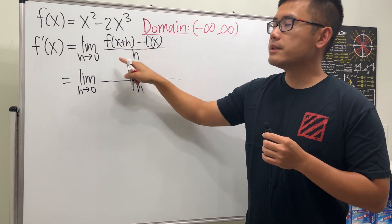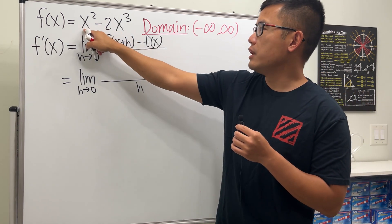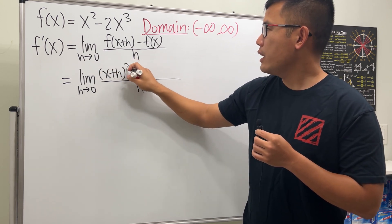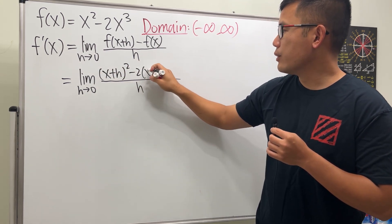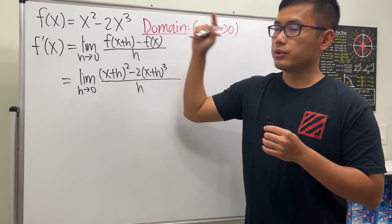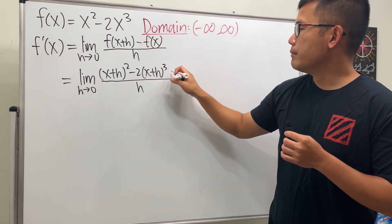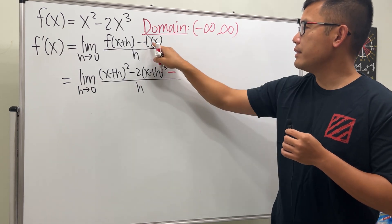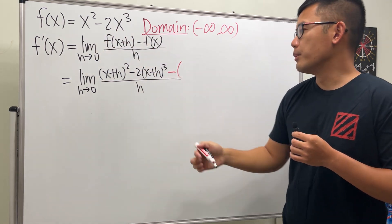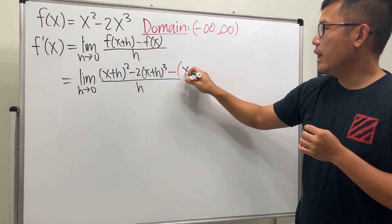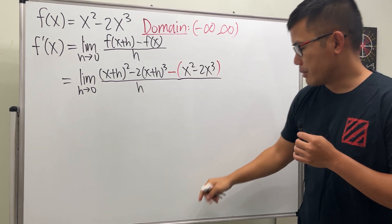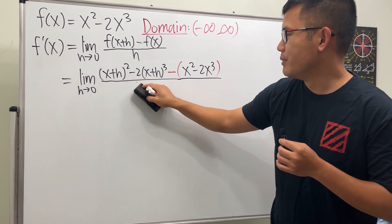For this part we will put x plus h into both terms of f. So we have x plus h squared, minus two times x plus h to the third power. Then we subtract the original f of x, so we open parentheses and write x squared minus 2x to the third power.